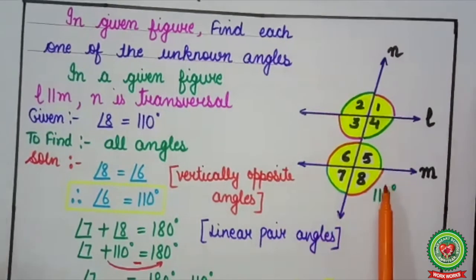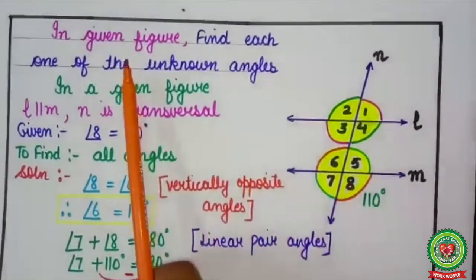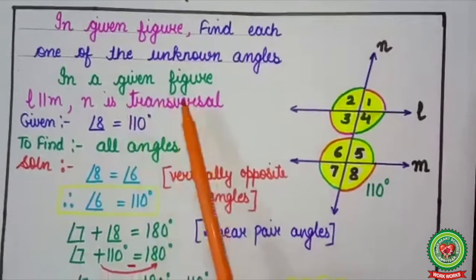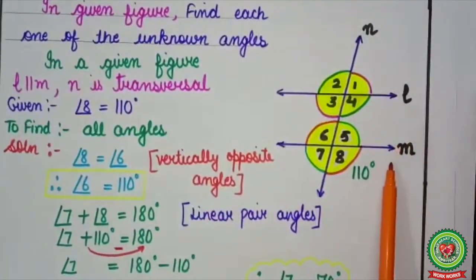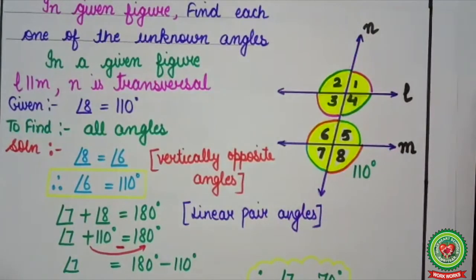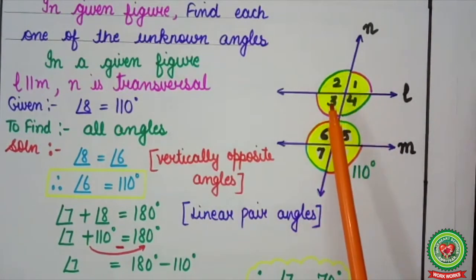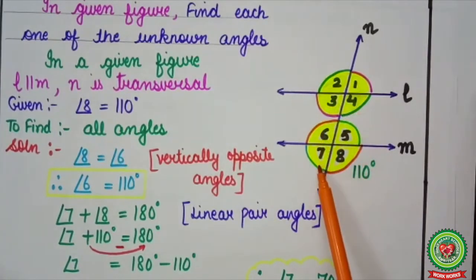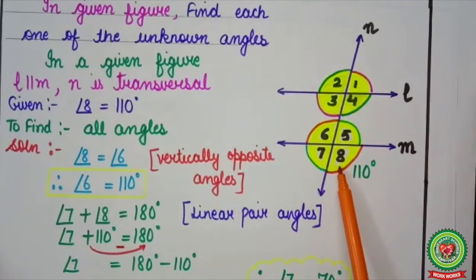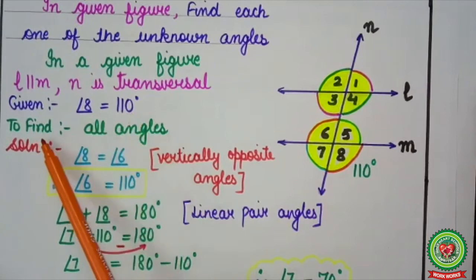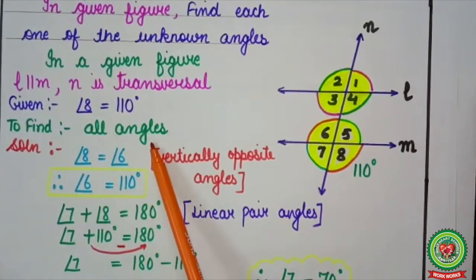Here this figure will be given. In the given figure, find each one of the unknown angles. In the given figure, L is parallel to M and N is the transversal. Next step: marking of angles — mark 1, 2, 3, 4, 5, 6, 7, 8. What is given? Angle 8 is 110 degrees. We have to find all angles.